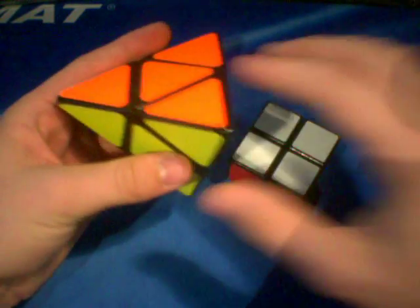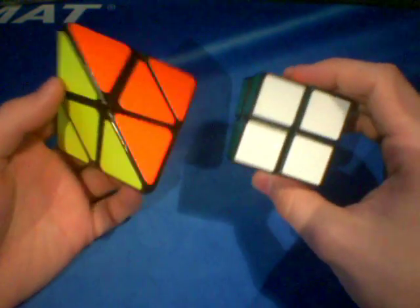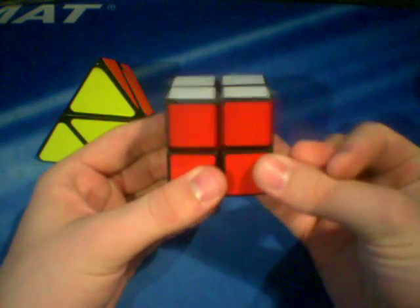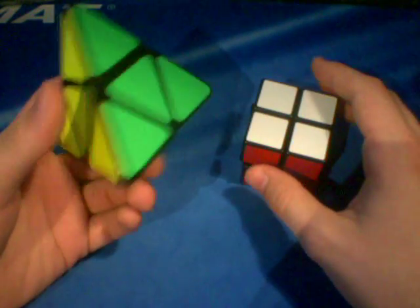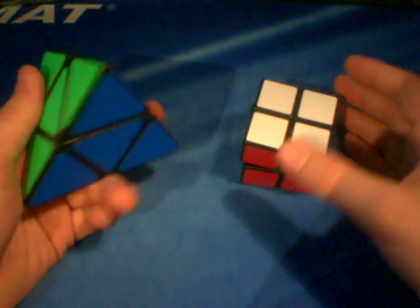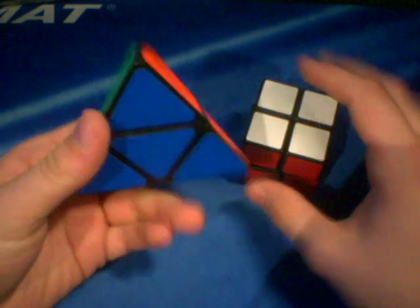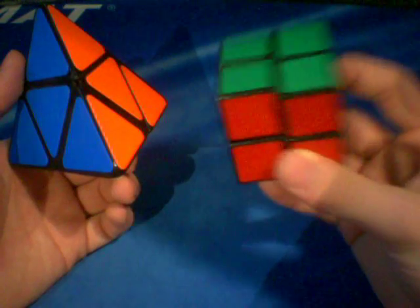So basically, what the Pyramorphings is, is it is a 2x2. Now, if you know how to solve a 2x2, you should be able to solve the Pyramorphings. So what I'm going to suggest that you guys do is try to solve it on your own and pretend that you're solving a 2x2.